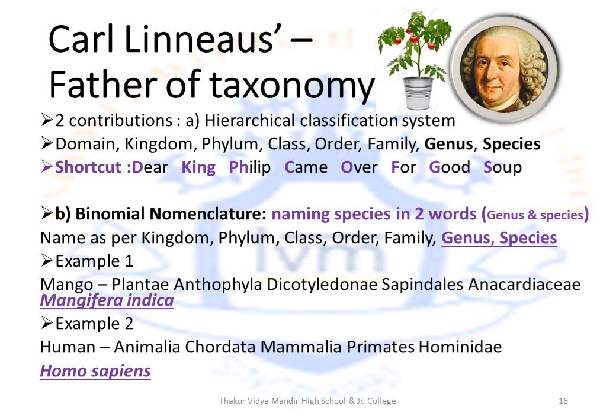Another example: the scientific name for humans as per the hierarchical classification system would be Animalia, Chordata, Mammalia, Primates, Hominidae, Homo, sapiens. Using the binomial nomenclature, the scientific name for humans is shortened to Homo sapiens.